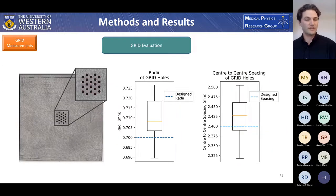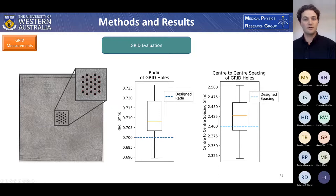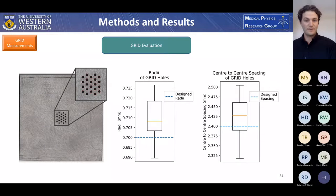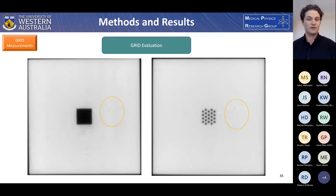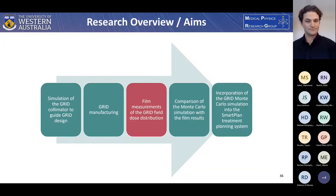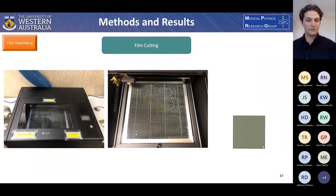To evaluate the manufacturing method, the grid was scanned and using a circular Hough transform in MATLAB, the radii of the holes were assessed. The average radii of the holes was around 0.71 mm, where they were designed to be 0.7 mm. The center-to-center spacing measured was around 2.43 mm versus the design spacing of 2.4 mm. A 6 MV portal image of the grids was taken to assess uniformity and check for significant air bubbles. The visible imperfections shown in the portal image are more likely caused by defects in the portal imager rather than defects in the grid.